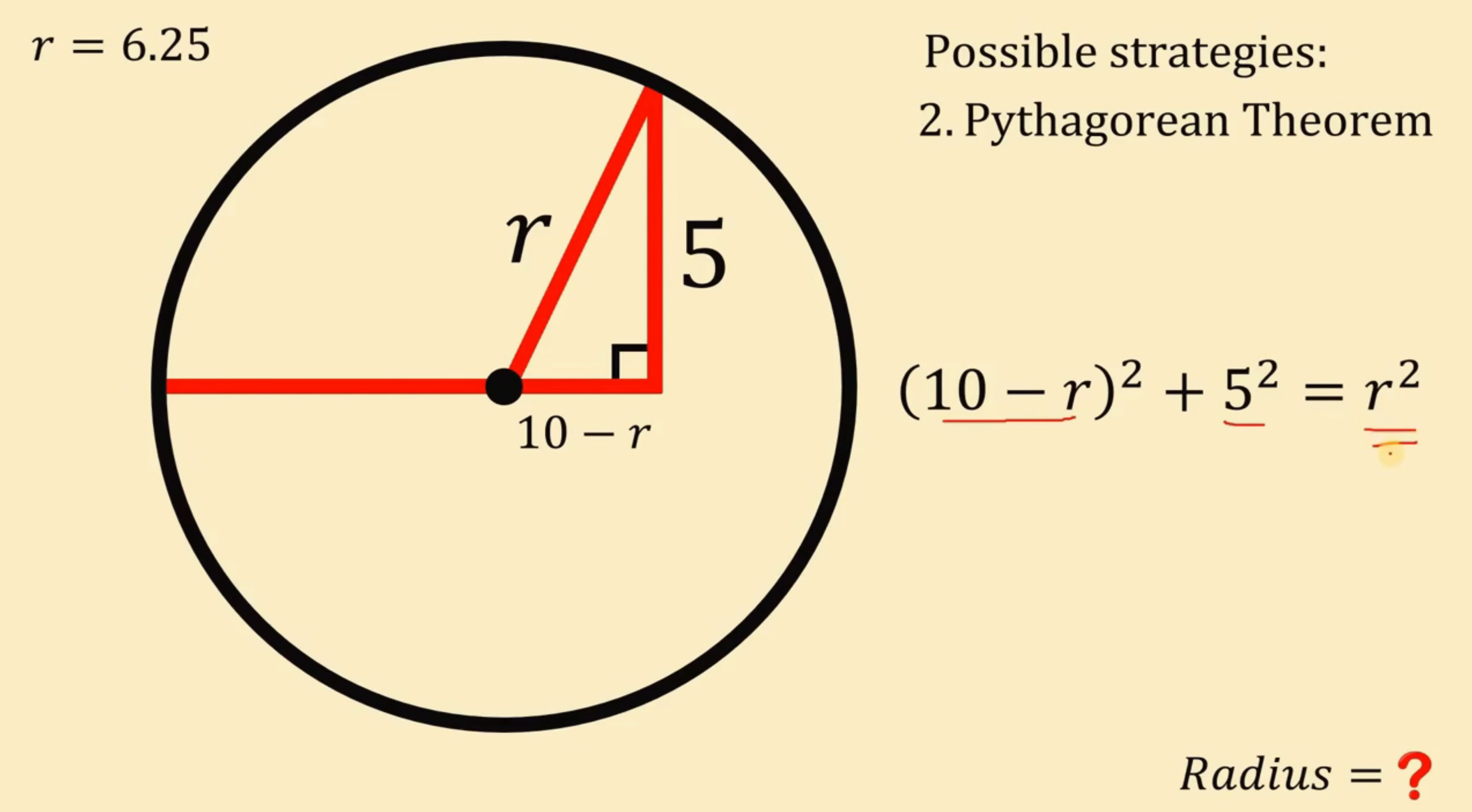Now, this equation is in terms of R. So we can now solve for the value of R. Now, let's simplify this one. 10 minus R raised to the power of 2. If we do this, we get 100 minus 20R plus R squared. Now, 5 squared is simply equal to 25. We know that for sure.